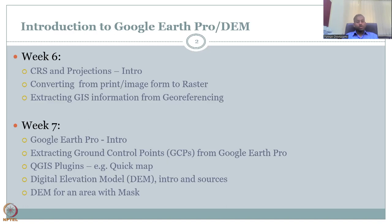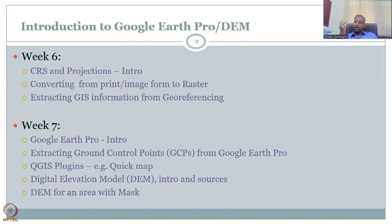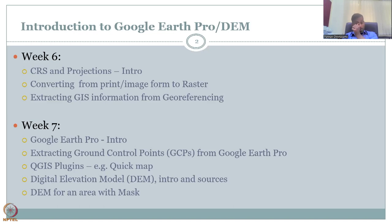Then we go into QGIS plugins, especially the Quick Map Services. This is an example of how, instead of going back and forth between Google Earth Pro and QGIS, you can have tools embedded in QGIS to quickly access data. We will also look into Digital Elevation Models — what they are, sources for them, with a hands-on exercise. DEMs are very important for rural development because they capture elevation gradients. With elevation gradient data, you know where water flows, where roads could be constructed with less budget, and where you can have better connectivity — both transportation and communication.